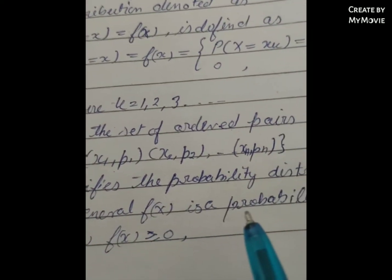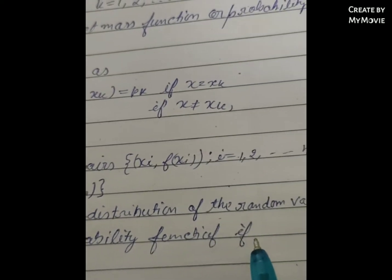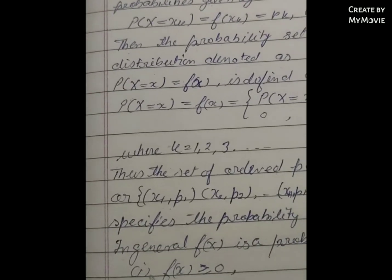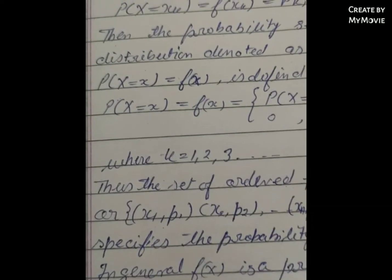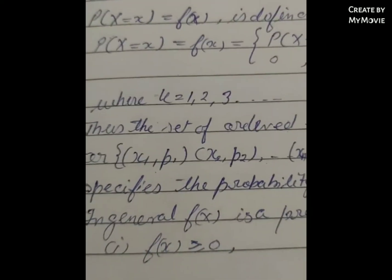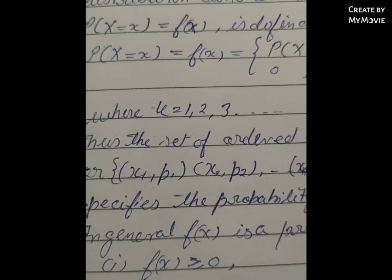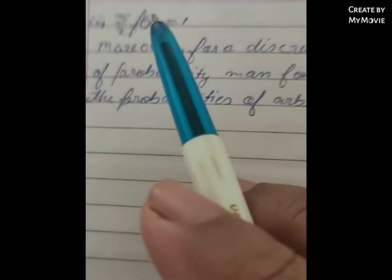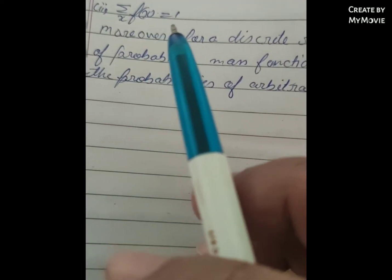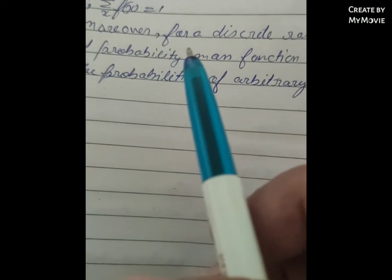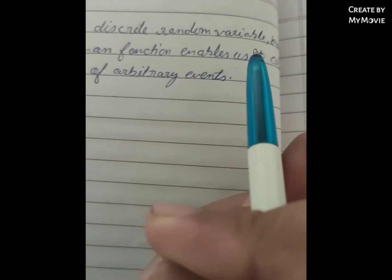f(x) is the probability function if: (i) f(x) greater than or equal to 0 for all x, and (ii) sigma f(x) equals 1. Moreover, for a discrete random variable,